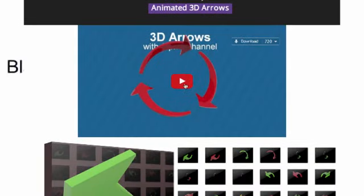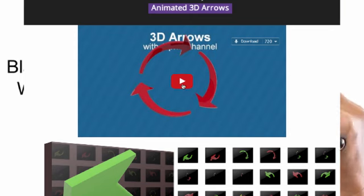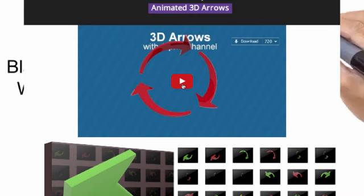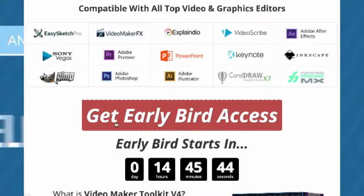You will be impressed at how many video assets you're going to get at such an amazing opening price. You get all these bonuses for the first 100 people just by picking up the Video Maker Toolkit version 4 from my link. So once again, 11 o'clock Eastern time — click the early bird access button and you'll be all set, and those bonuses will be packed right into your JVZoo download area.